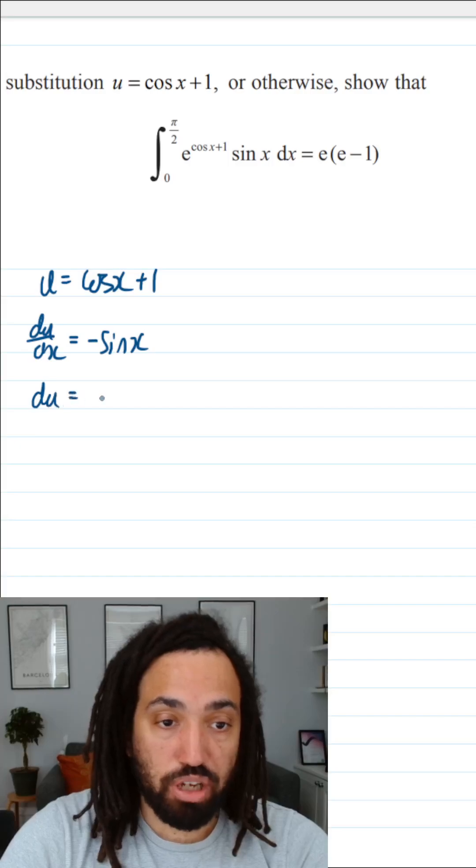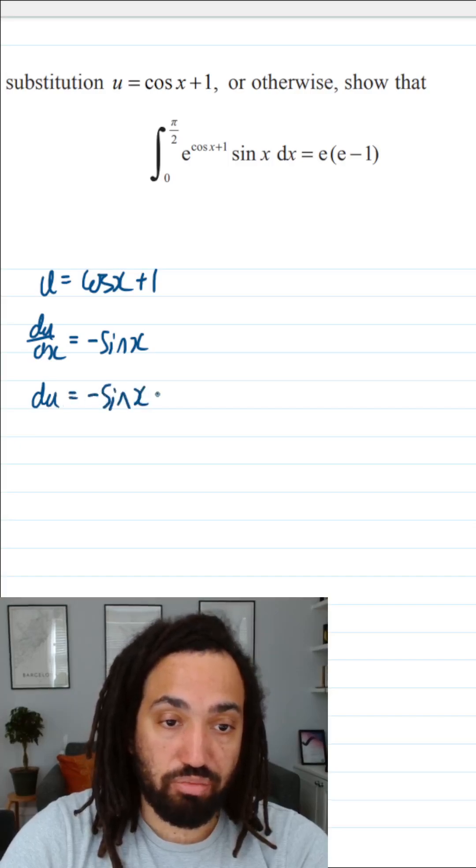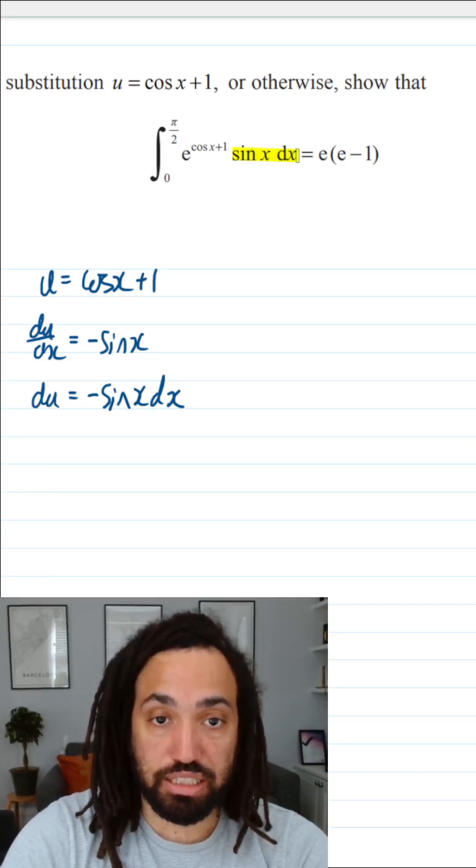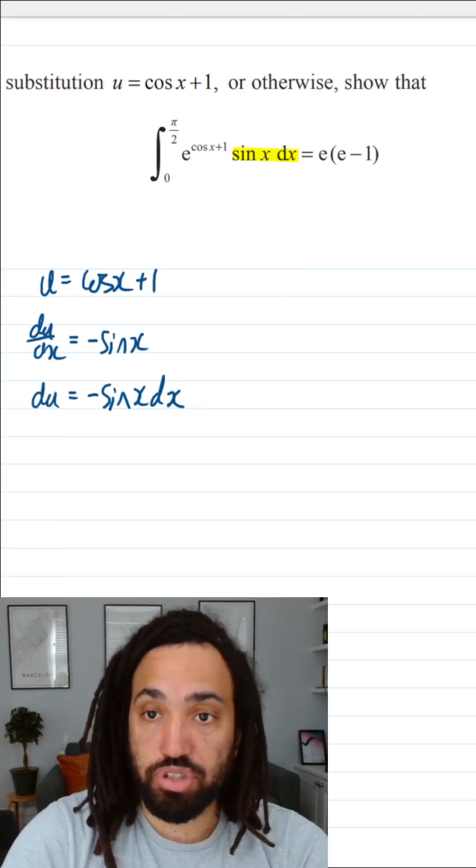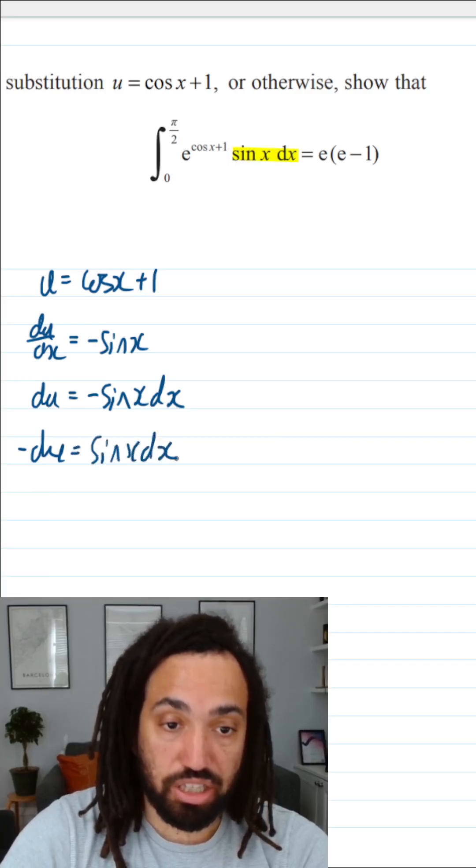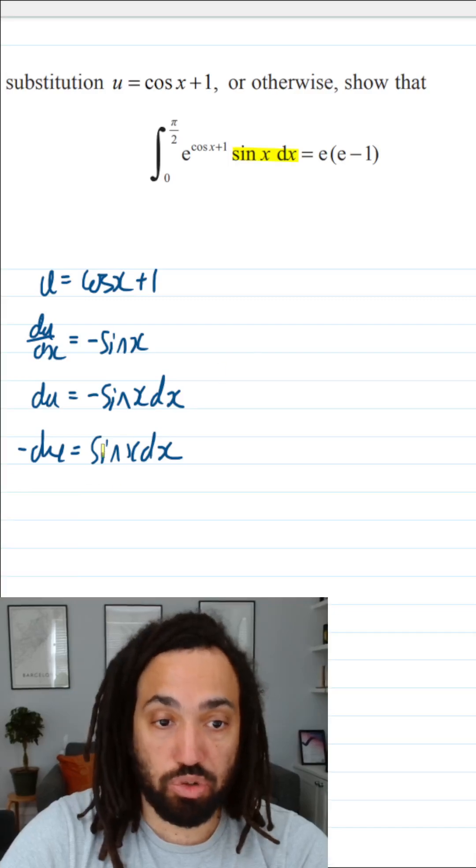We're then going to multiply through by dx. I can see in the integral we've got sin x dx. So if I just multiply through by minus 1 here, this gives us sin x dx, so that can get swapped straight out for minus du.